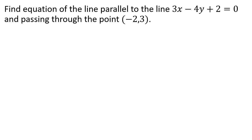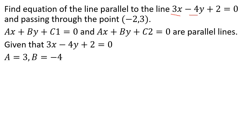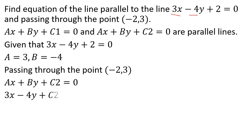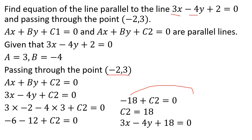Find the equation of the line parallel to 3x - 4y + 2 = 0 and passing through the point (-2, 3). A parallel line has the form ax + by + c2 = 0 with the same a and b values. Substituting the point: 3(-2) - 4(3) + c2 = 0, so -6 - 12 + c2 = 0, giving c2 = 18. The required equation is 3x - 4y + 18 = 0.